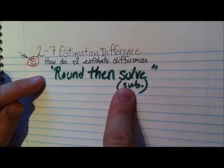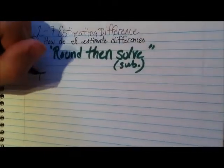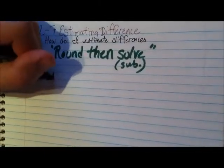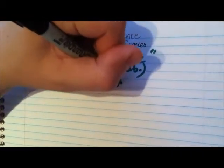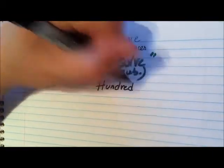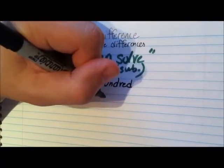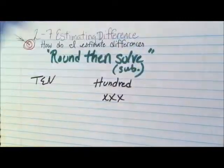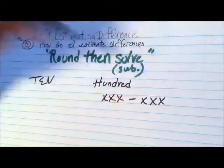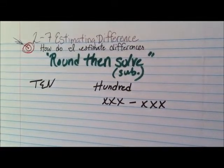And in this case, we're going to be doing some subtraction. So you can round to the nearest ten, like before. You can also round to the nearest hundred. It really depends on the problem. If you have a three-digit problem and you're subtracting another three-digit number, then you could use three digits to round to the nearest hundred.